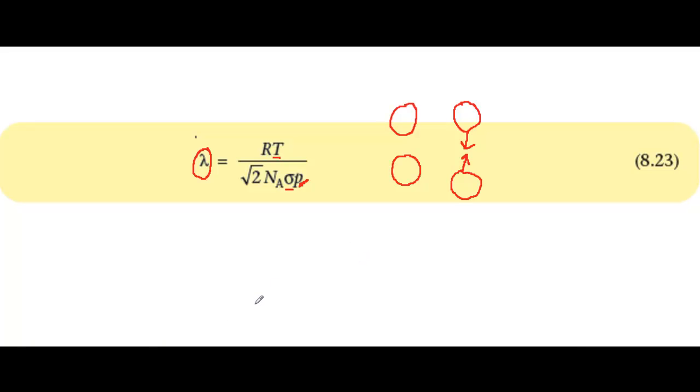So, we can explain the form of equation 8.23 in terms of the kinetic theory. But remember this is for an ideal gas, which obeys the kinetic theory perfectly.